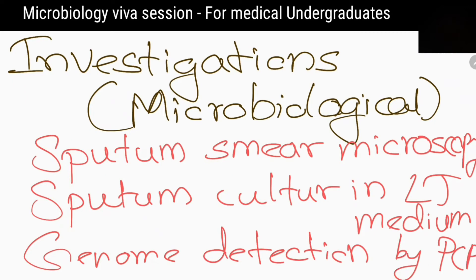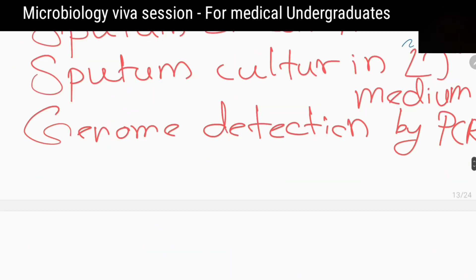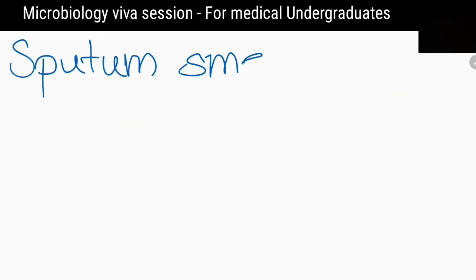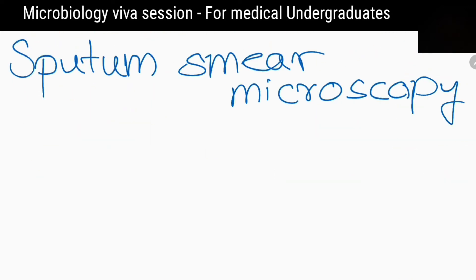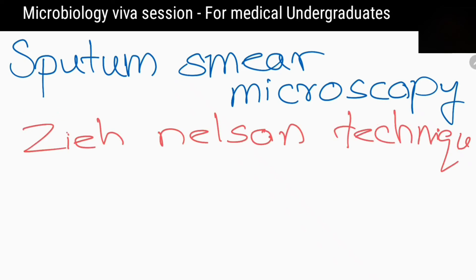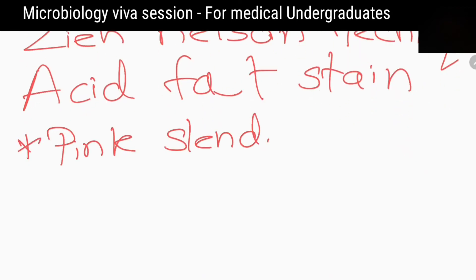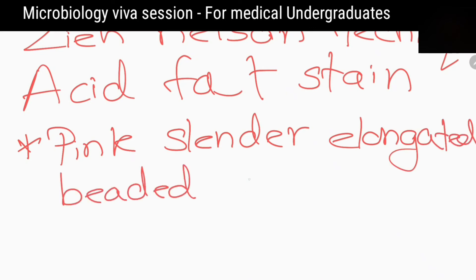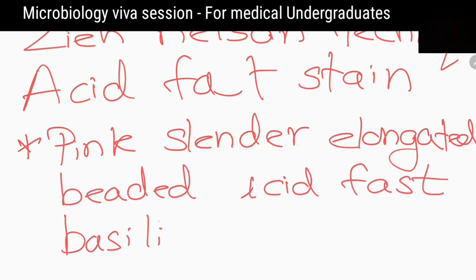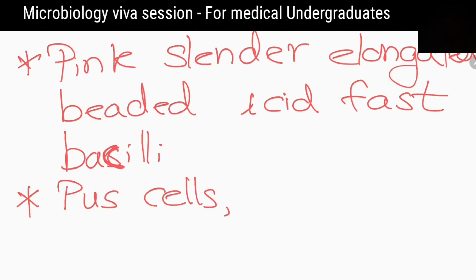Genome detection by PCR technique. What do you expect to see in sputum smear microscopy, and what staining method would you use? The smears can be stained by Ziehl-Neelsen technique. I expect to see pink, slender, elongated, beaded acid-fast bacilli, along with pus cells, epithelial cells, and commensal bacteria.